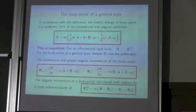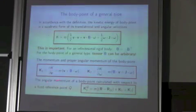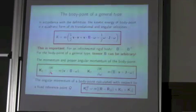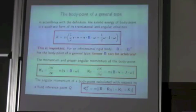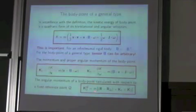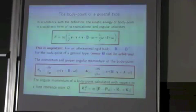Such a particle will be discussed further. The momentum and proper angular momentum of the body point are defined as the partial derivatives of kinetic energy with respect to translational velocity and angular velocity correspondingly. The angular momentum of the body point calculated with respect to some fixed point q is calculated by this formula.